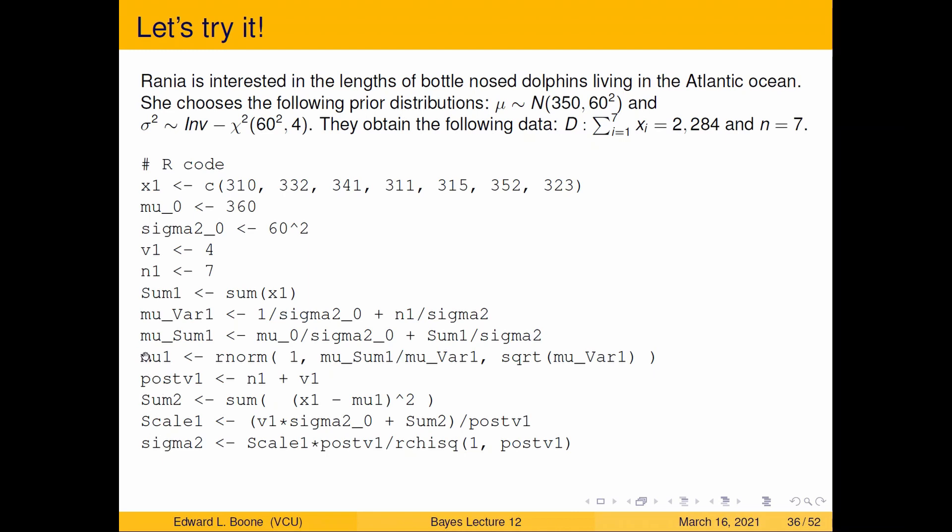And so you'll see here, I added some sampling in here. Mu one is rnorm one, and it has my mean that I'm interested in and my variance that I'm interested in that I've already calculated. Then I'm going to take mu one out of there and it gets plugged into my sum two. See there, it ends up right there. And then we're going to pull from a chi squared by multiplying the scale times my post degrees of freedom, divide that by a chi squared one, which means we're pulling one sample and the post degrees of freedom. And sure enough, I will get an inverse chi squared out of this. We're almost there.